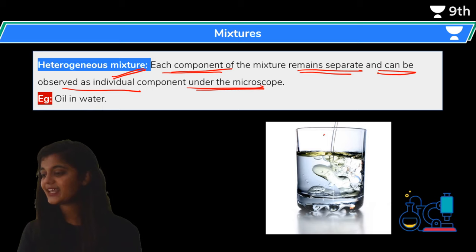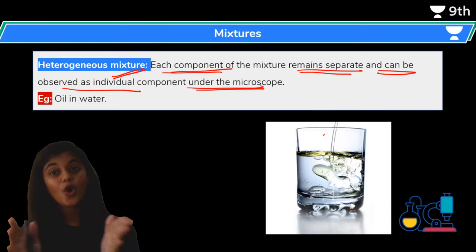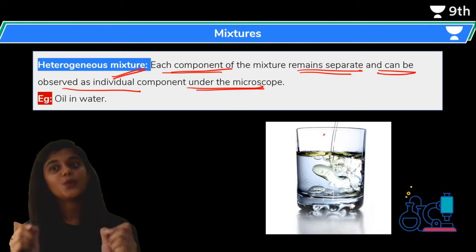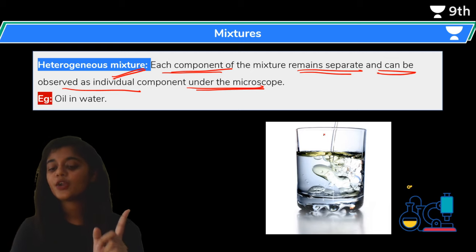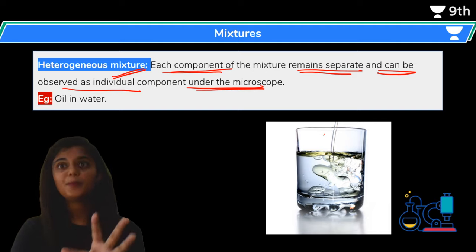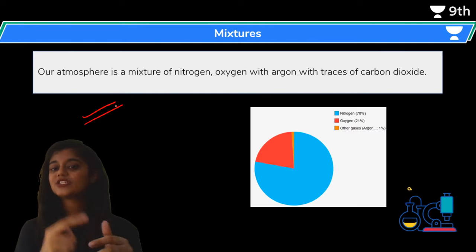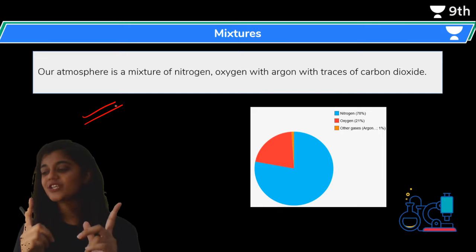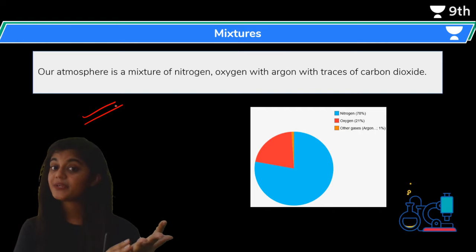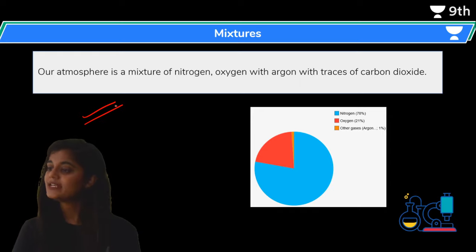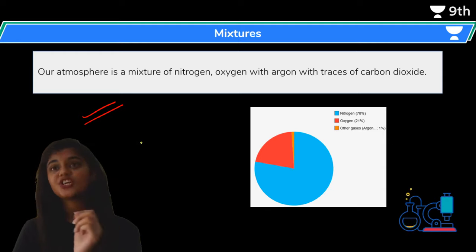Separation of a heterogeneous mixture is easy because they are different. Mixture of immiscible liquids — two liquids that do not mix with each other — is an example of a heterogeneous mixture. Remember, liquid is not the only possibility: you can have solid-solid, gas-gas, and other combinations, depending upon the components. Our atmosphere is also a mixture of gases — air is a mixture of nitrogen, oxygen, argon, and traces of carbon dioxide. In the mixture, major components and minor components are present.